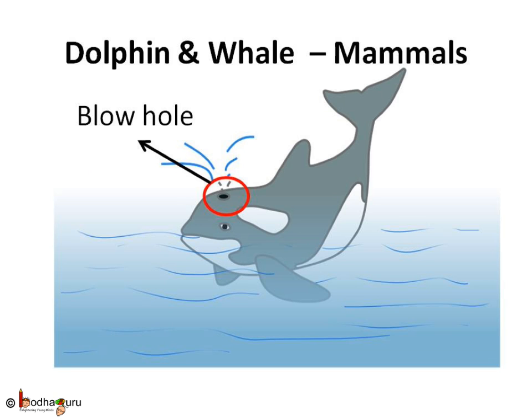What about dolphins and whales? Unlike fish, which breathe through gills in the water, dolphins and whales breathe air from their blowhole, which is the hole on the top of their head. They come to the surface of water, open the blowhole on the top of their heads, expel air and quickly take in new air before going back down below the water surface.